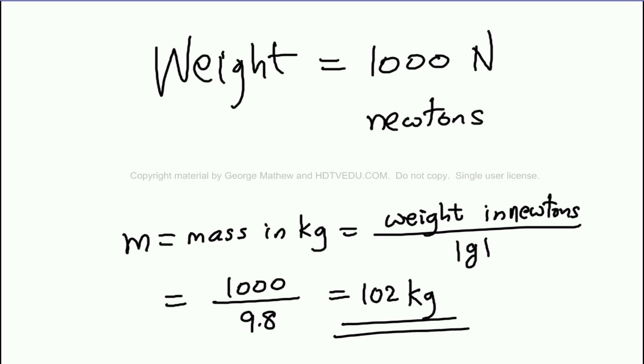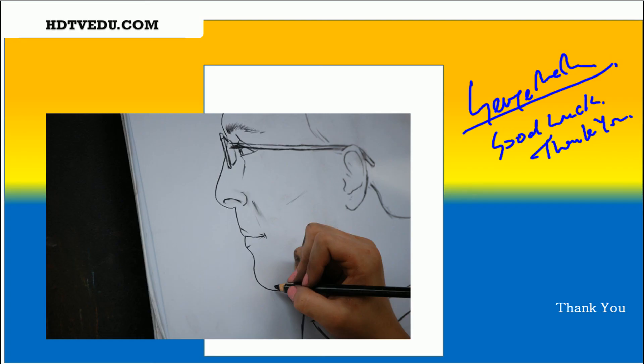So weight is 1000 newtons and mass is 102 kg. This is George Matthew signing off. Good luck!